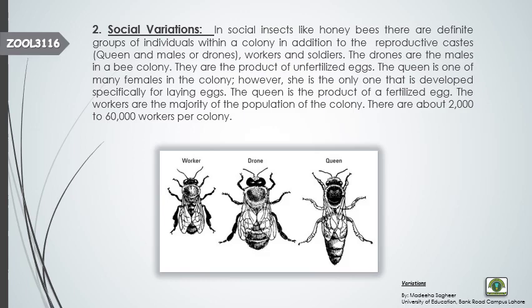Social variations are mostly seen in social insects like honey bees, ants, and wasps, which live in colonies. In their colonies, individuals are designated to different ranks. They have a reproductive caste including queens and males (also called drones). There are also workers and soldiers. The queen is the female reproductive member of the colony, a product of the fertilized egg. The queen is meant only to lay eggs. Drones are the male reproductive members of the colony and are the product of unfertilized eggs. The rest of the individuals — workers and soldiers — are not reproductive.